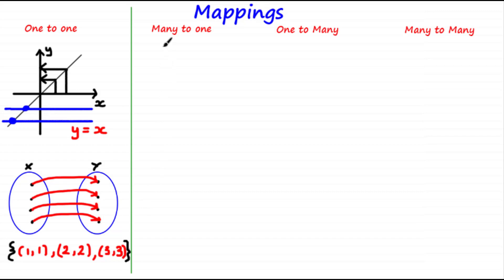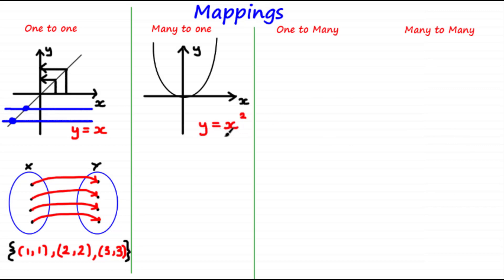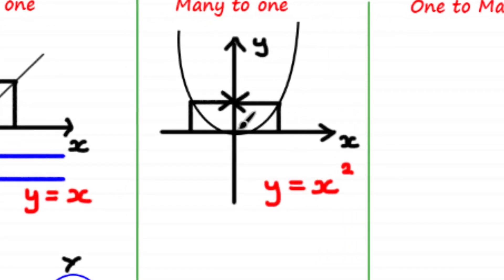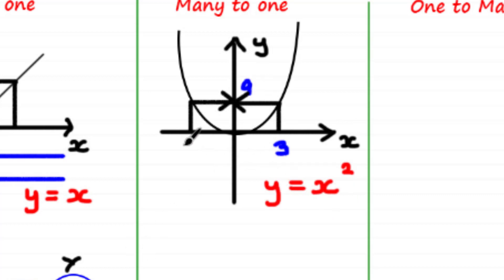The next type of mapping is a many-to-one mapping, and an example is the equation y equals x squared, whose graph you can see here. From the graph this is a many-to-one mapping because many different values of x — many meaning more than one — map onto only one value of y. For example, if x equals 3 then y equals 3 squared which is 9, and the same result occurs if x equals negative 3. So this is an example of many values of x mapping to the same value of y.